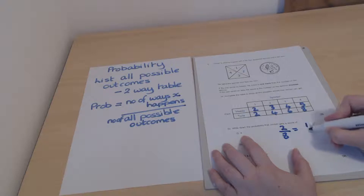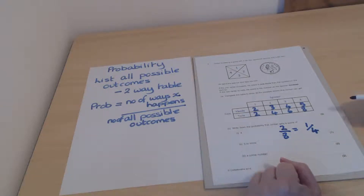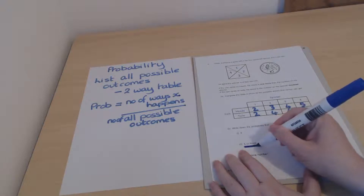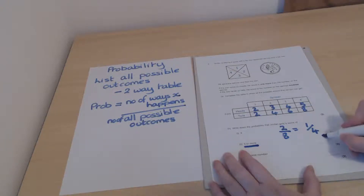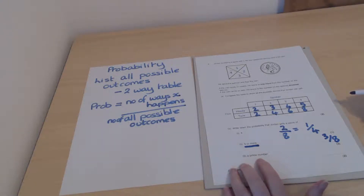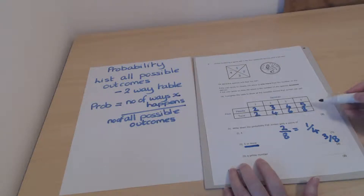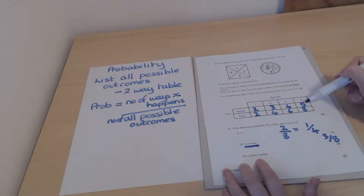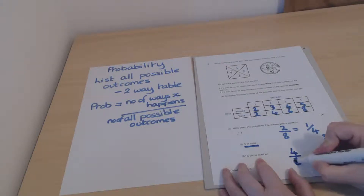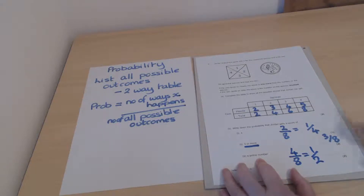For the probability of 5 or more, there are 3 ways to achieve it, so that's 3 out of 8. For the probability of getting a prime number: 2, 3, and 5 are prime; 4, 6, and 8 are not. Counting prime numbers in the table gives 4, so the probability is 4/8, which simplifies to 1/2.